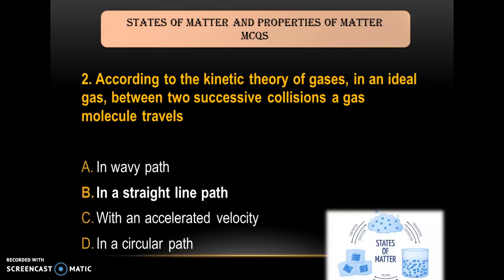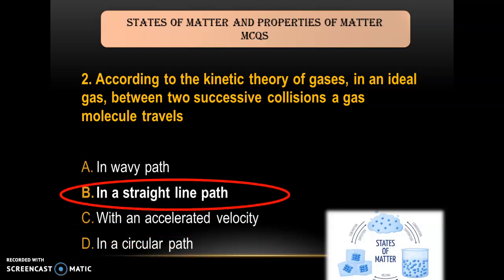Question 2: According to the kinetic theory of gases, in an ideal gas between two successive collisions, a gas molecule travels in — A) a wavy path; B) a straight line path; C) with accelerated velocity; D) in a circular path. As we all know, gas molecules always travel in a straight line between two successive collisions, so the answer is straight line path.